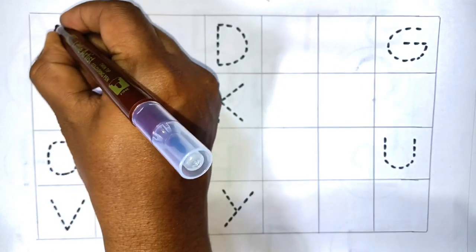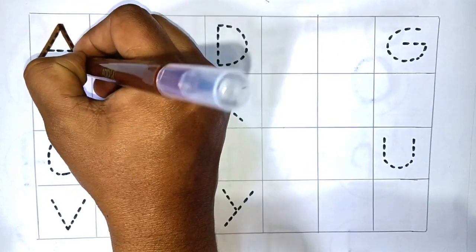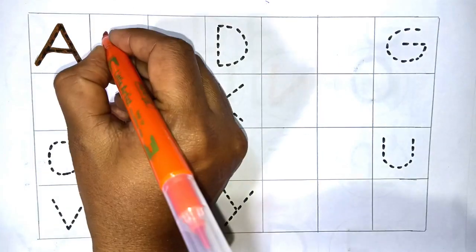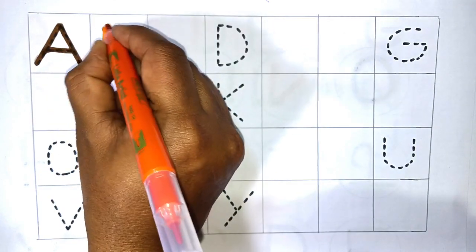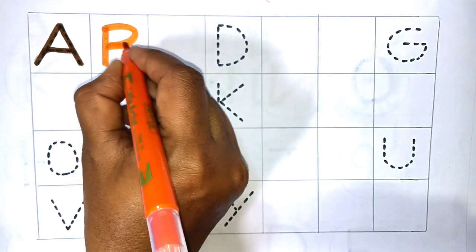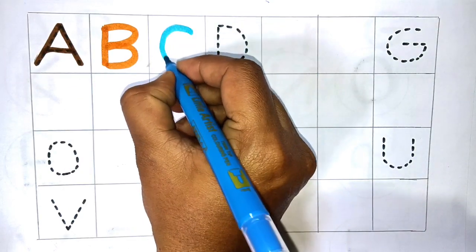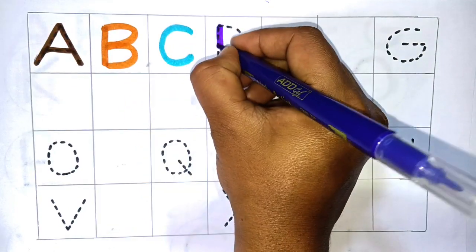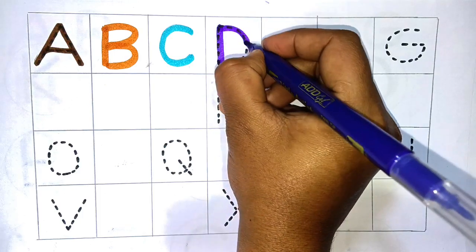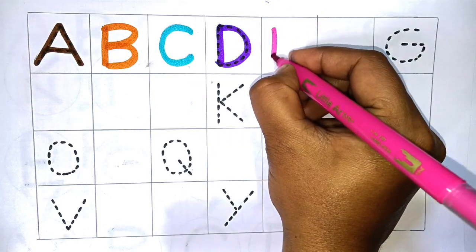A. A for apple. B. B for ball. C. C for cat. D. D for dog.